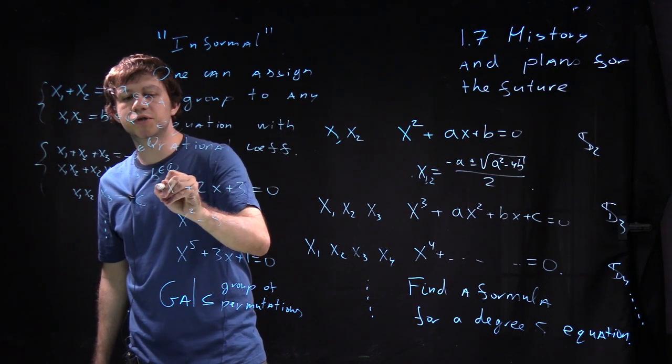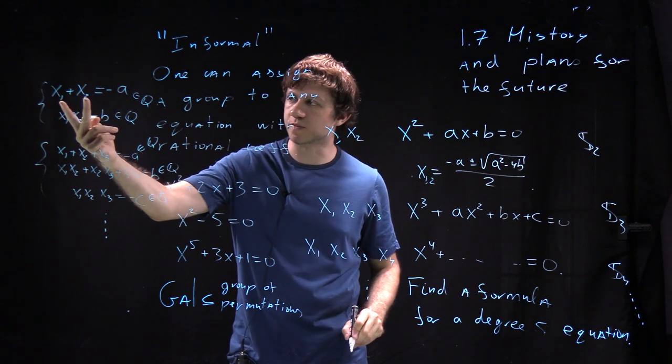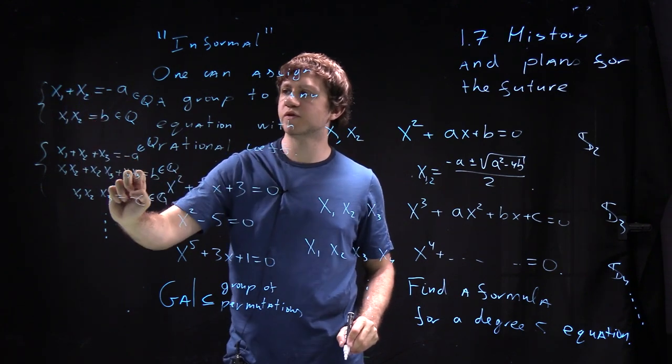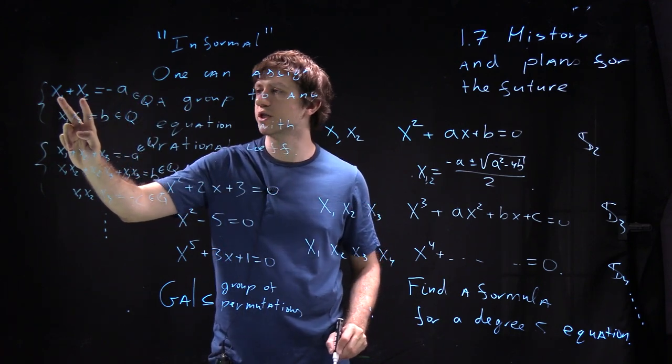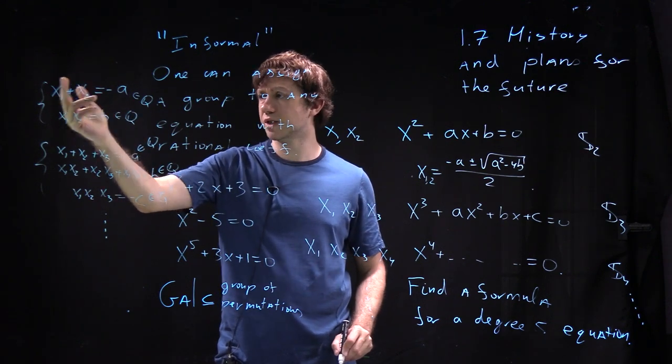And then if you just do any permutation with your roots here like a transposition when you change one and two or fix both of them all these equations will hold still. So because if you change x1 and x2 the roles are changed then the equations are symmetric.